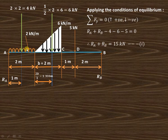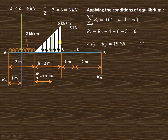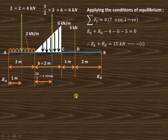The UVL has a triangular distribution, uniformly varying from 0 to a maximum of 6 kilo newton per meter. The equivalent point load is calculated as half base into height — the area of the triangular distribution. Base is 2 meter and height is 6 kilo newton per meter, so total equivalent point load is 6 kilo newton. It acts through the centroid of the triangular distribution at a distance of 2b/3, where b is 2, giving 1.333 meter.